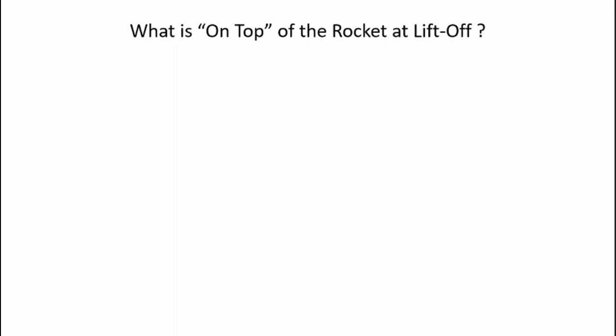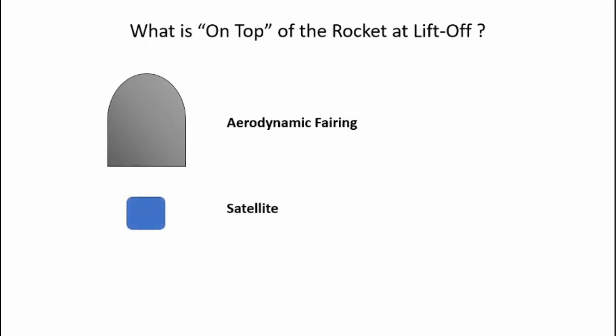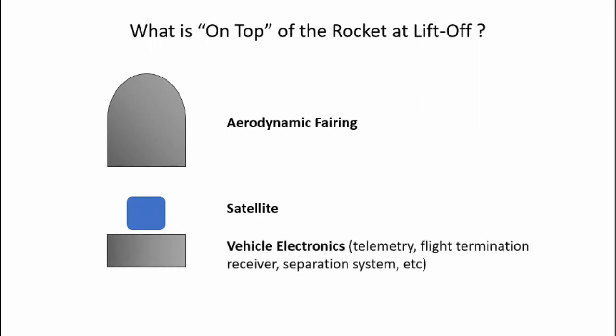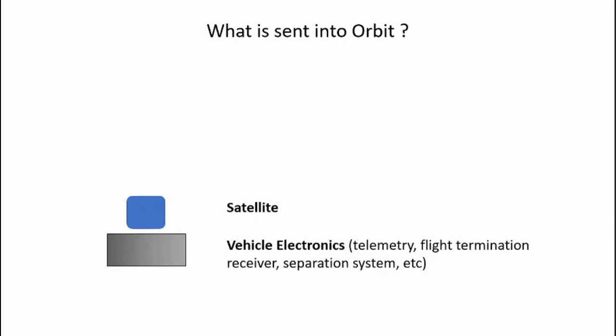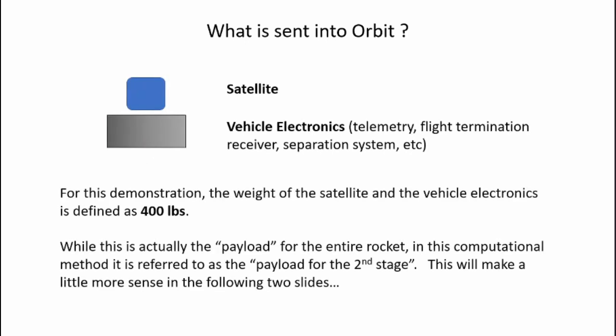Let's take a look at our rocket configuration. On top of the rocket at liftoff we have an aerodynamic fairing which protects the satellite, the payload or satellite itself, control electronics providing telemetry to radio data back to the ground, a flight termination system to blow up the rocket if necessary, and the separation system to eject the satellite. What is actually sent into orbit is the satellite and the vehicle electronics. Generally, the fairing is ejected sometime during second stage burn so we have less mass to accelerate. For this demonstration, we're going to assume the weight of the satellite and vehicle electronics is 400 pounds. In this computational method, it is referred to as the payload for the second stage.